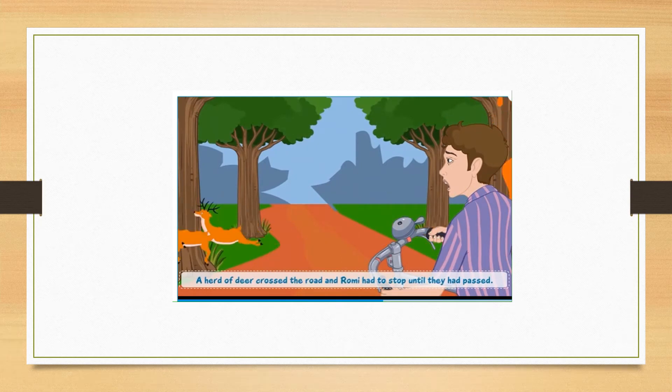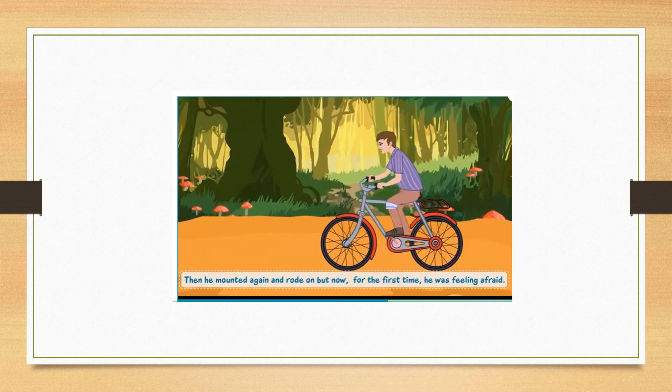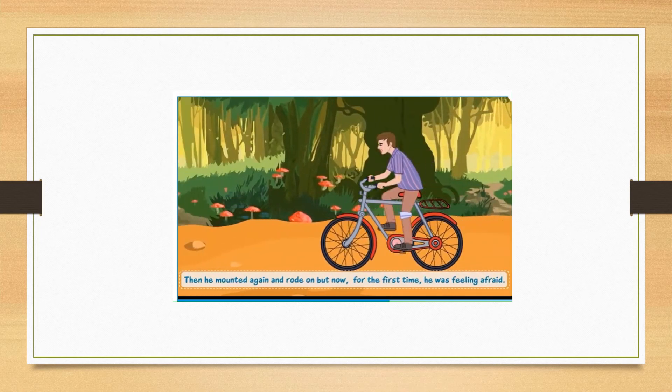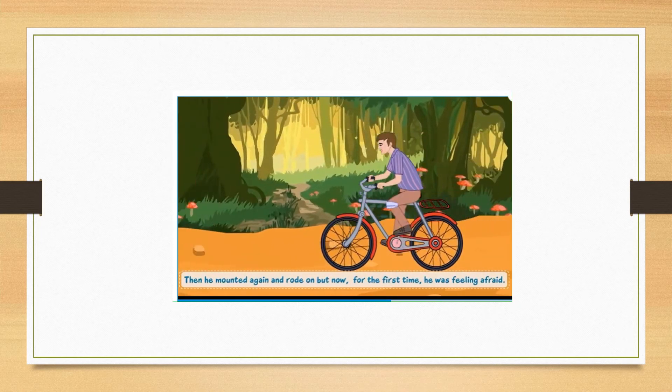A herd of deer crossed the road and Romy had to stop until they had passed. Then he mounted again and rode on, but now for the first time, he was feeling afraid.